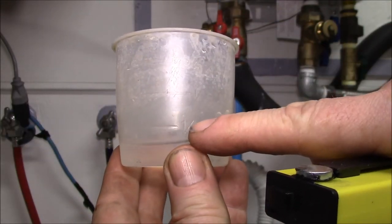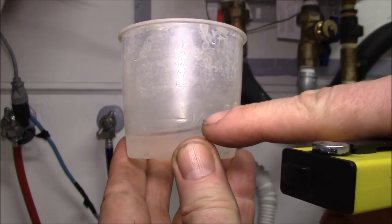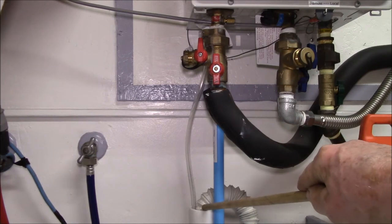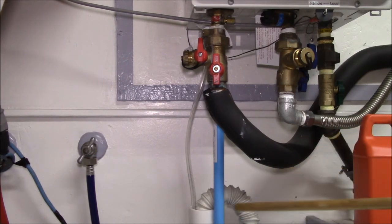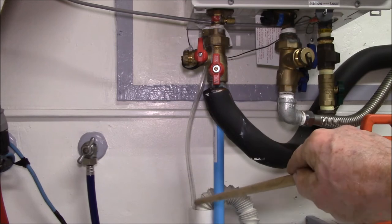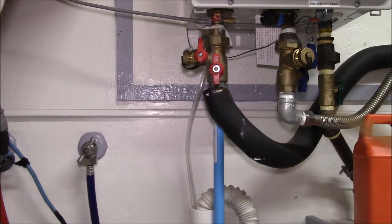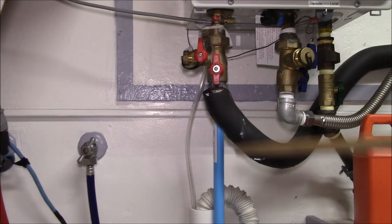So this is the drain where the clothes washer empties into, as well as the utility sink comes in from the side. The detergent residues from the clothes washer are in that section of drain line, and that can help to reduce the acidity of the condensate.